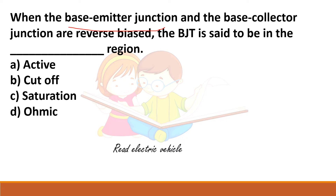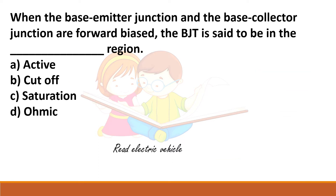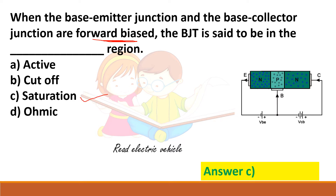A similar question: when both the base-emitter junction and the base-collector junction are reverse biased, the device is off — that is cutoff. When both junctions are forward biased, the device is on — that is saturation.